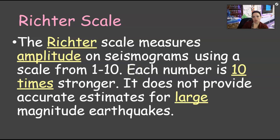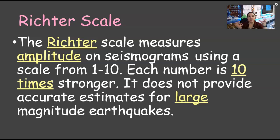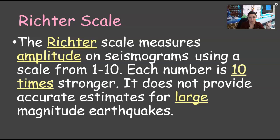Then you have the Richter scale. The Richter scale measures that amplitude — that strength, that magnitude — on seismographs, using a scale from 1 to 10. Each number is 10 times stronger than the previous one. So say you've got a Richter scale of 6 — it is 10 times stronger than the 5. However, it does not provide accurate estimates for large magnitude earthquakes, like 8 and above.